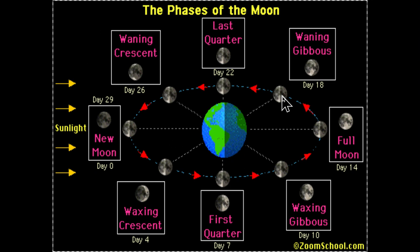By day 18, we move into what we call the waning gibbous. The term waning means decreasing — so waxing is increasing, waning represents a decreasing illumination. By day 22, we're in the last quarter phase. By day 26, we're in the waning crescent phase, and the illumination is going away. Then by day 29, we return back to the new moon phase.